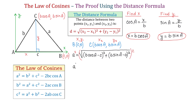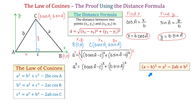Then on the left side we have A squared, and on the right side the square root cancels. We have (B cosine of angle A minus C) all squared plus (B sine of angle A) all squared. To expand the first term, we use the formula (A minus B) squared equals A squared minus 2AB plus B squared. So B cosine of A squared gives B squared cosine squared of A, minus the double product 2BC cosine of angle A, plus C squared.